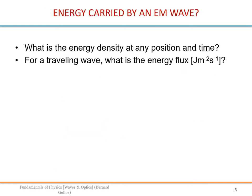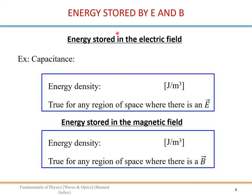The first question we address is: what is the energy density at a given position and time, and for a traveling wave, what is the energy flux, which we will call the intensity? Let's start with the energy stored by an electric field and a magnetic field, beginning with the electric field using a simple example: the capacitor.